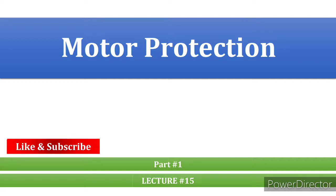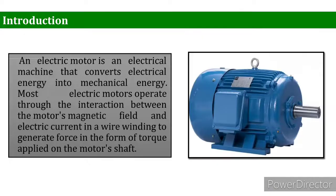As an introduction, an electric motor is an electrical machine that converts electrical energy into mechanical energy. Most electric motors operate through the interaction between the motor's magnetic field and electric current in the wire windings to generate force in the form of torque applied on the motor shaft.